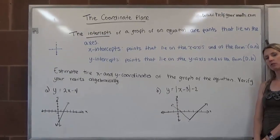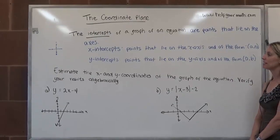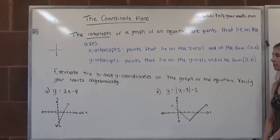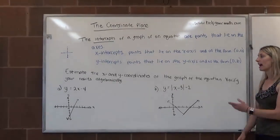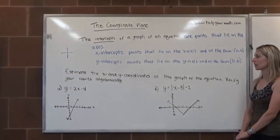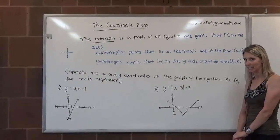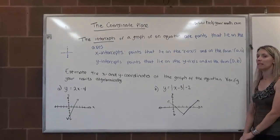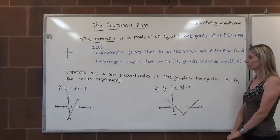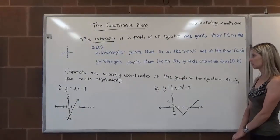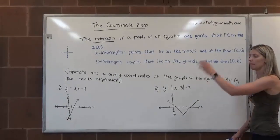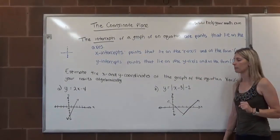If you're asked to find the y-intercepts and you're given the equation, what you want to do is substitute in zero for x — set x equal to zero to find the y-intercepts. Now we're going to look at a few examples. First we're going to look at the graphs, keeping in mind that I drew these by hand so they might be imperfect. We're going to estimate the x and y-coordinates from the graph and then verify algebraically.